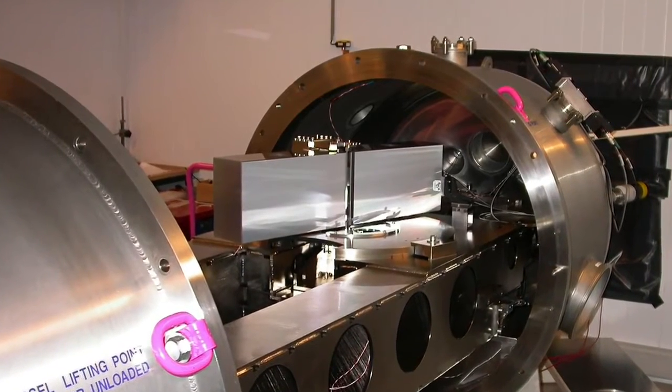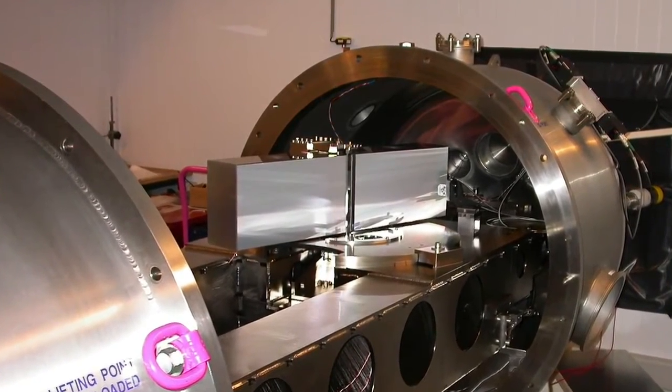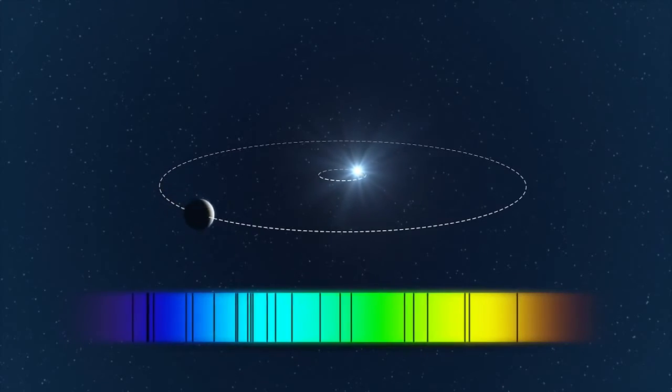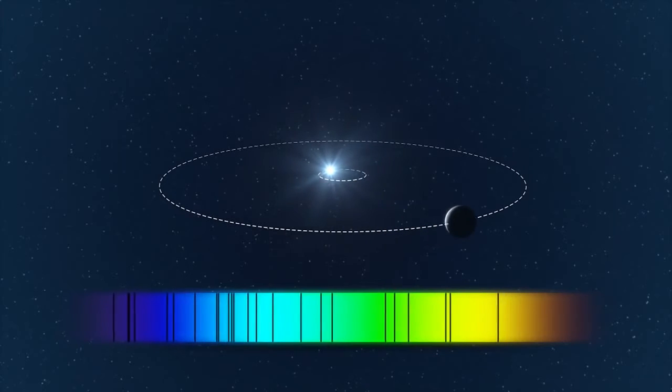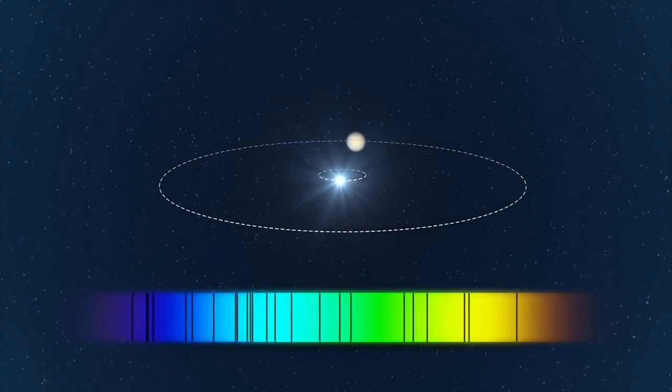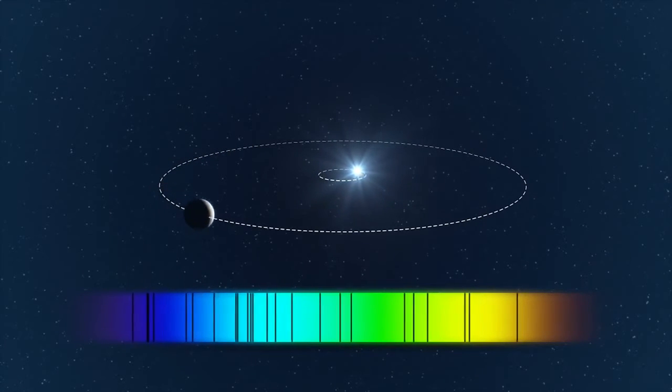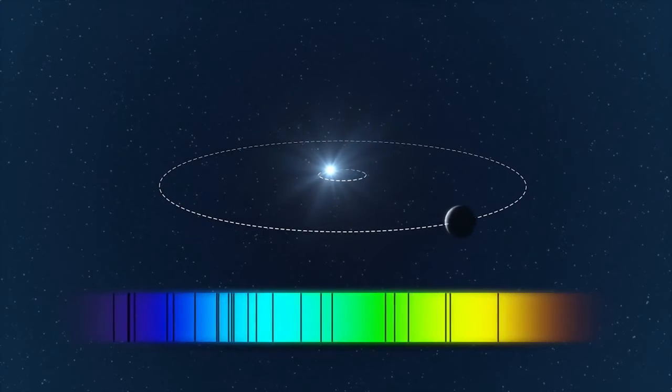This extremely precise spectrograph will monitor Proxima Centauri's motion, looking for the minute effects of the gravitational pull of an exoplanet, which causes the parent star to wobble back and forth. This tiny motion can be detected by HARPS through tracking its radial velocity over time.